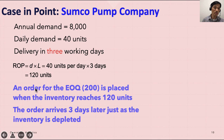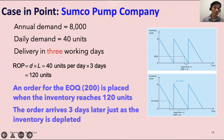ROP equals 40 units per day times 3 days, which gives 120 units. This means when your inventory hits 120 units, you must order the EOQ of 200 units. This minimizes total inventory management cost, prevents stockouts, and the order will arrive in 3 days. So your reorder point is 120 units, and you order 3 days in advance.